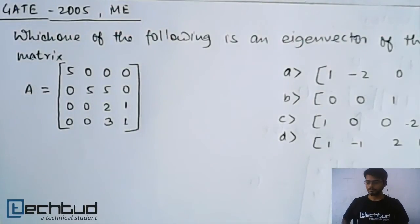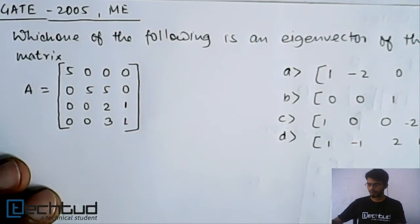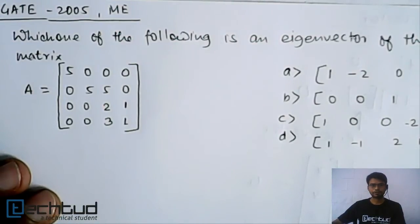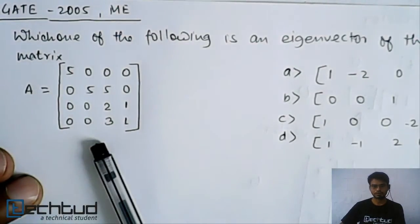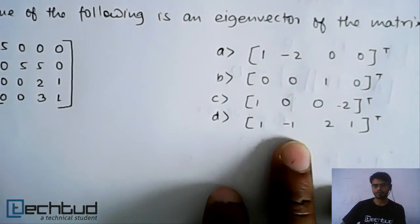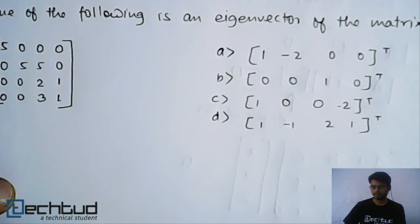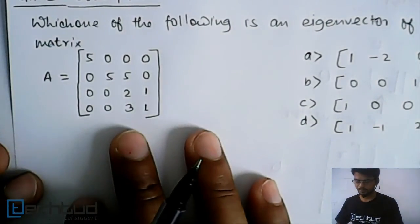Hello everyone, welcome to tech2.com. This is another example of eigenvalue and eigenvector where we have given matrix A and we have to find out the eigenvector — the possible eigenvector for this matrix — and we have been given the options. So we have to find out the eigenvector for this matrix.